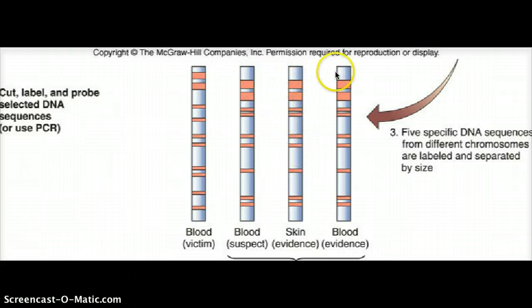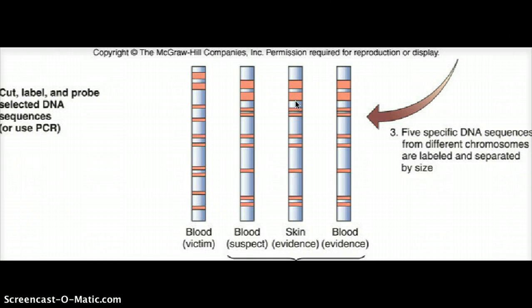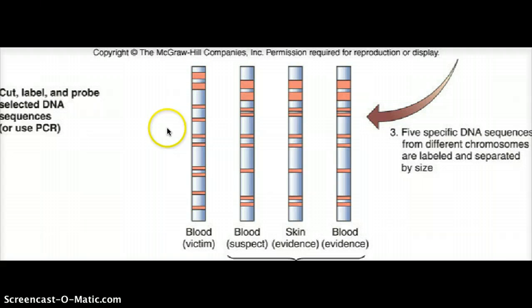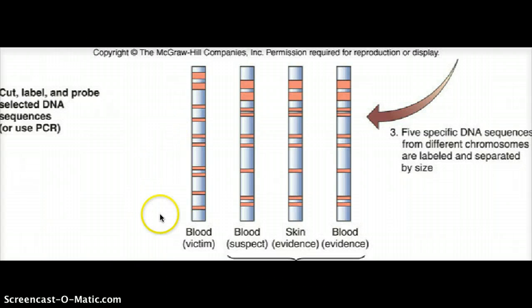These are the banding patterns we get for the skin and blood of the evidence. Just looking at this, it's really obvious that the banding patterns of this evidence DNA definitely match the suspect and not the victim. This is one way that DNA profiling can be used.